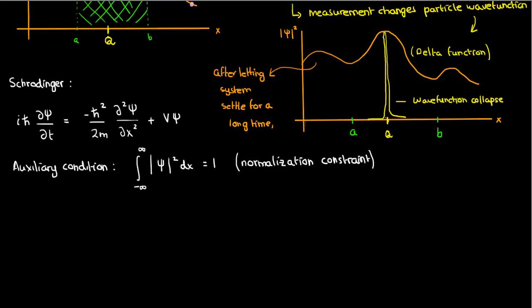Instead, the auxiliary condition we have on our solution is the normalization constraint. Solutions to the Schrödinger equation have to be normalizable because they are wave functions, and wave functions represent a probability density function. If the solutions are not normalizable, we can't use them to represent a physical system. For example, the trivial solution psi equals 0 is not normalizable because its integral from negative infinity to infinity will always be 0, never 1 — which is why psi equals 0 is an unphysical solution, because the particle has to be somewhere.